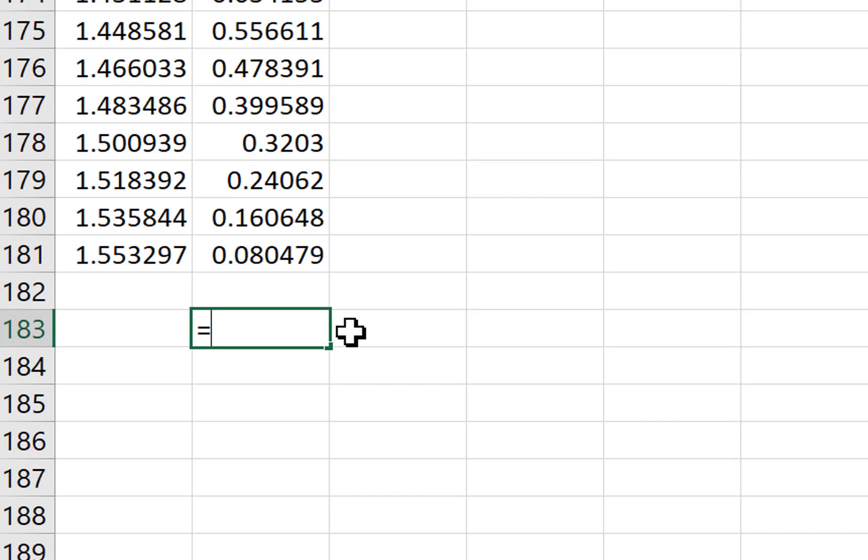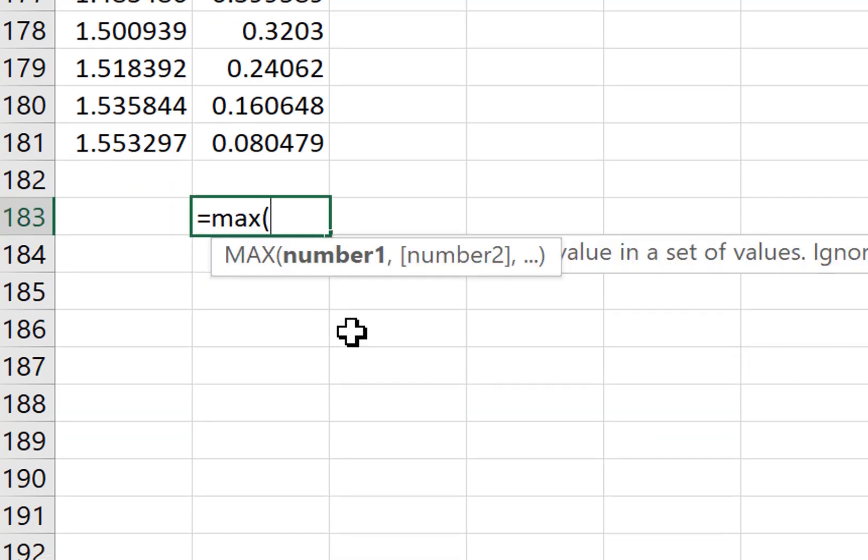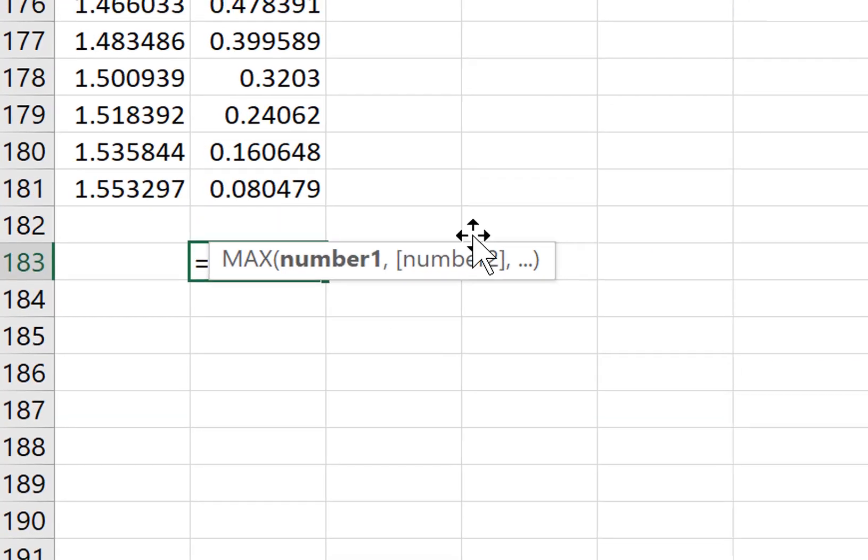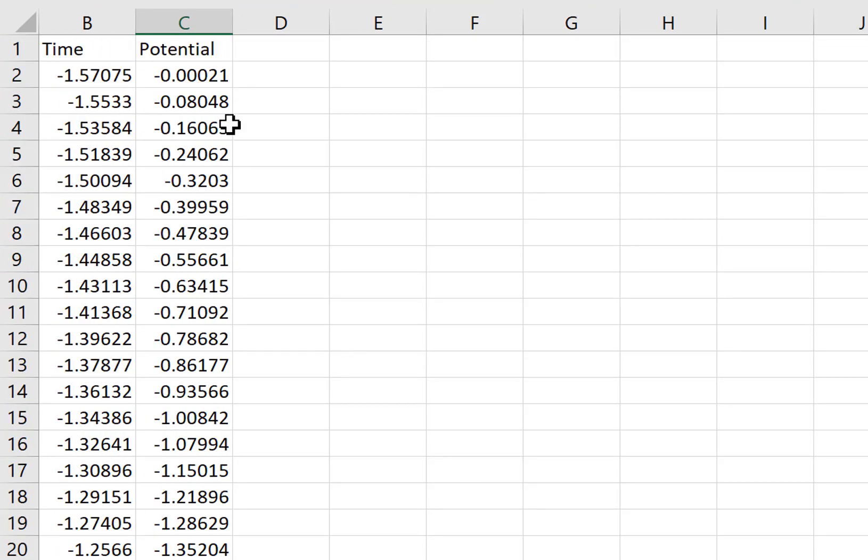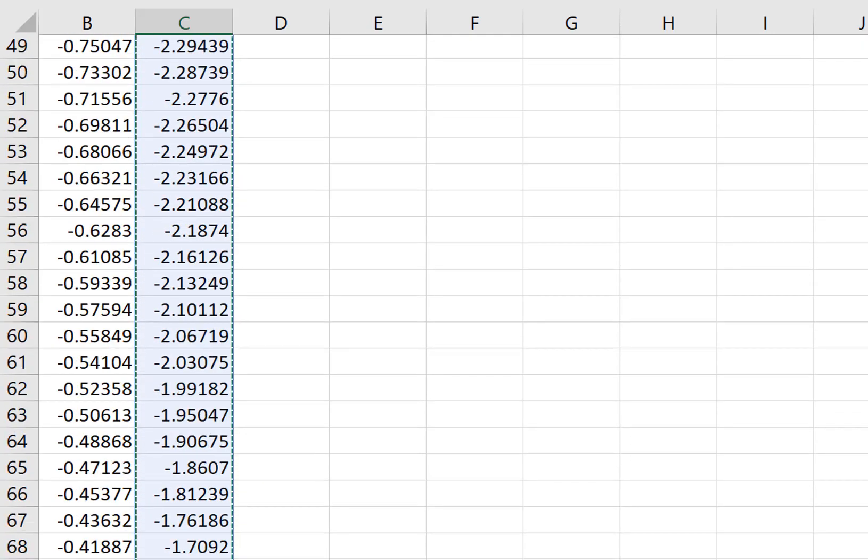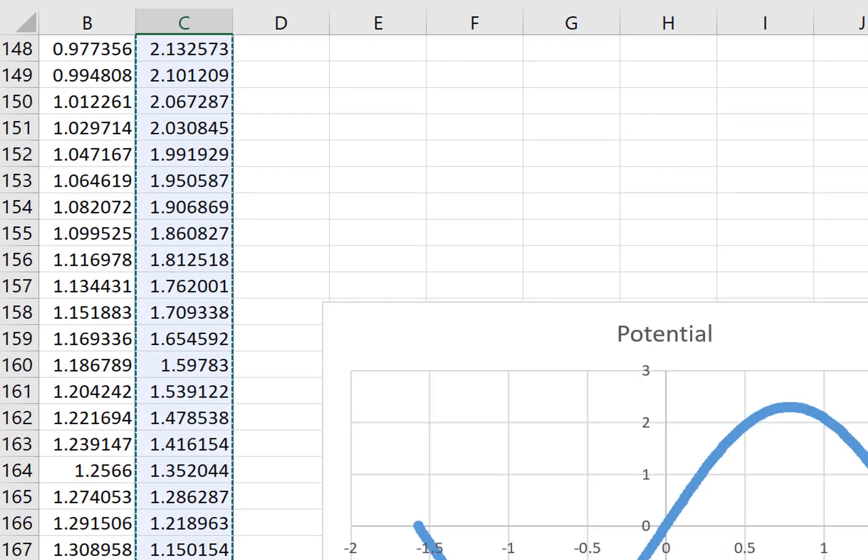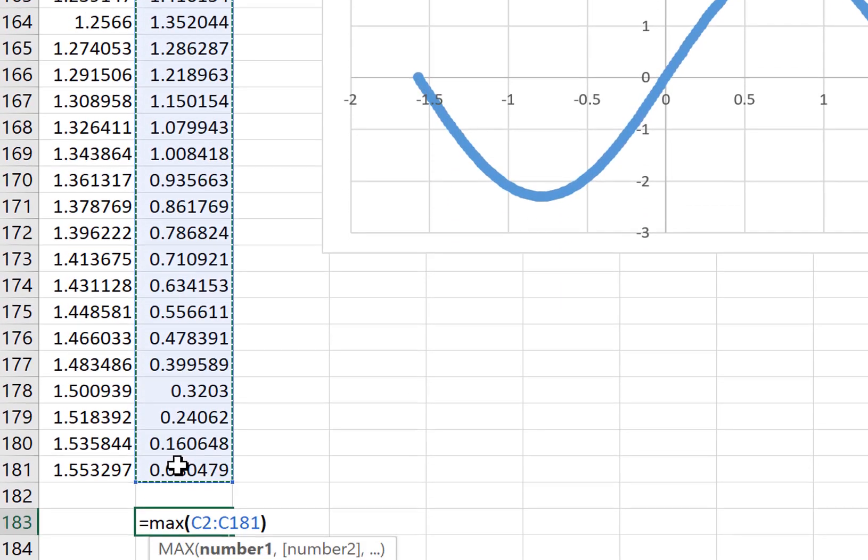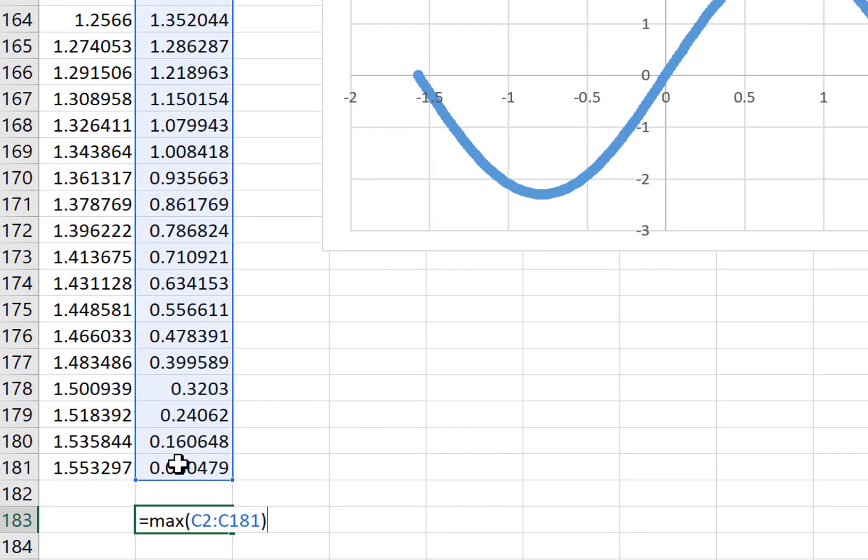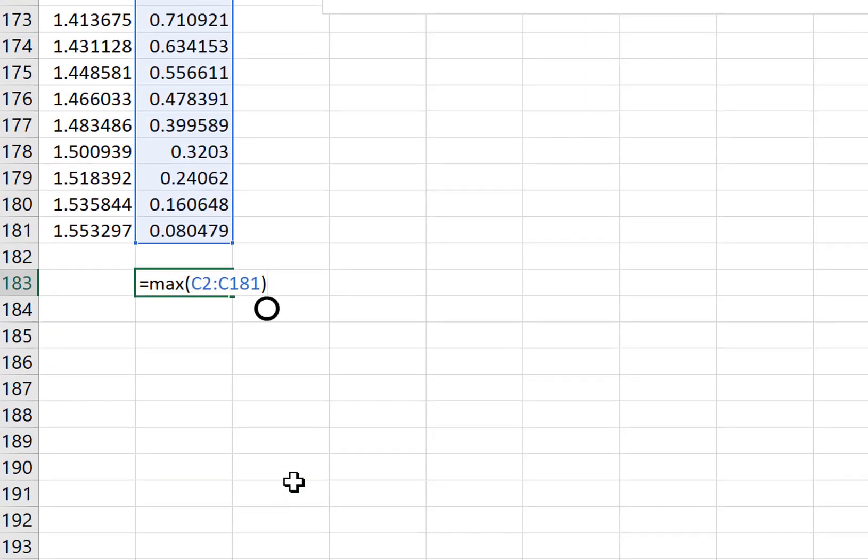I can come down here and say insert a function, that's the equal sign that tells Excel there's a function there. Maximum. And I can highlight my data points. They start in row two and go to row one eighty one and it tells me my maximum value.